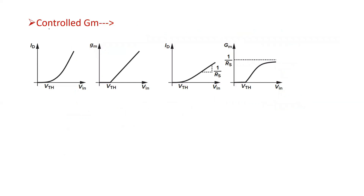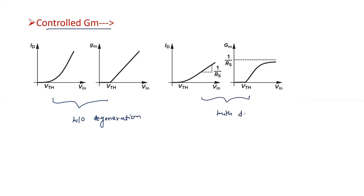With source degeneration, a controlled GM can be obtained. The graphs without source resistor degeneration show current as a nonlinear, quadratic function of overdrive voltage, while the graphs with degeneration show current as an almost linear function of input voltage. Due to RS, we obtain a finite and controlled value of GM.